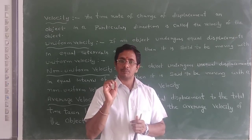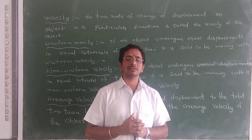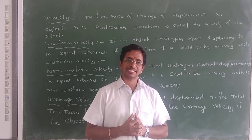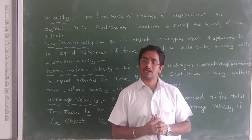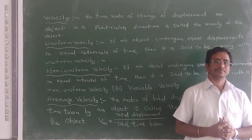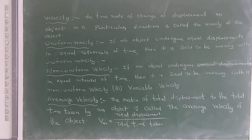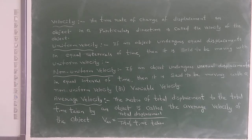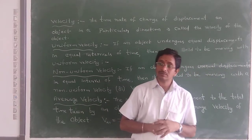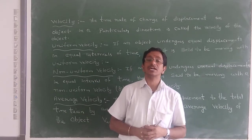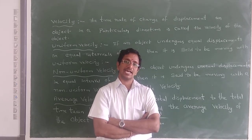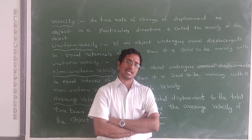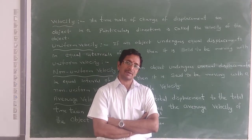First, I shall explain point to point. After that, I will explain on the board. Please observe carefully. Our first concept is Velocity. The rate of change of displacement is called Velocity. It is a vector quantity. The units are meter per second.